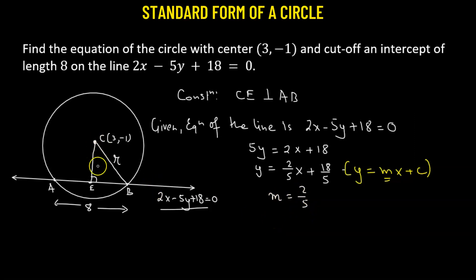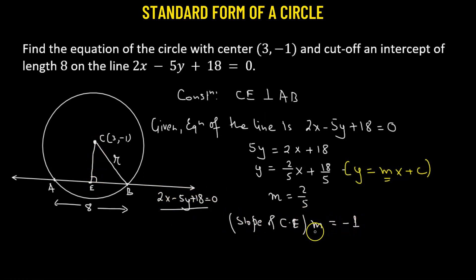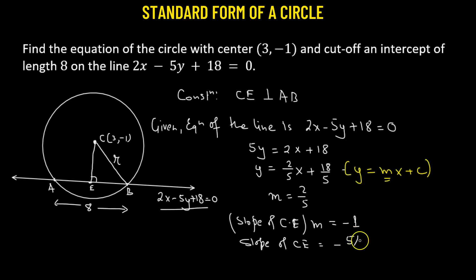Using this, we can find the slope of CE. We know that when two lines are perpendicular, the product of their slopes equals negative 1. Since m equals 2/5, the slope of CE is negative 5/2.